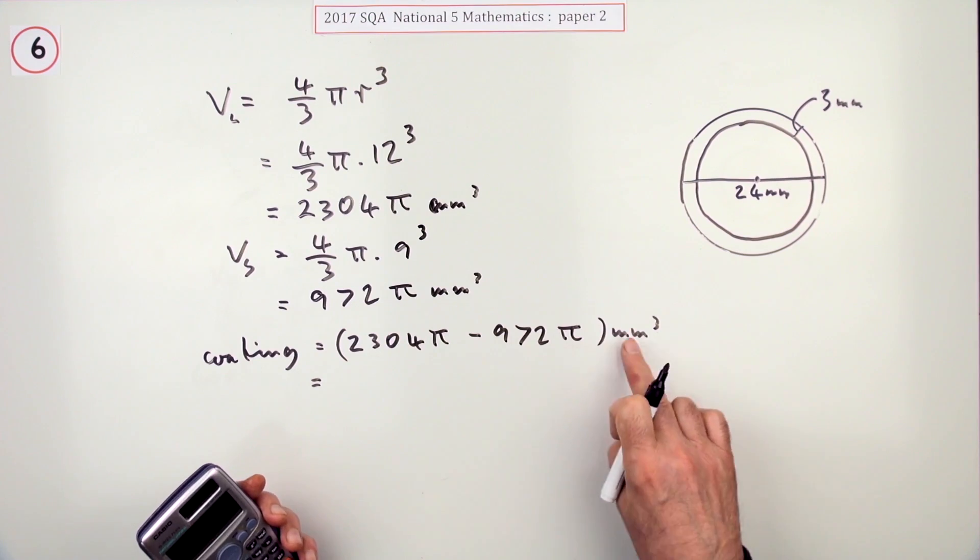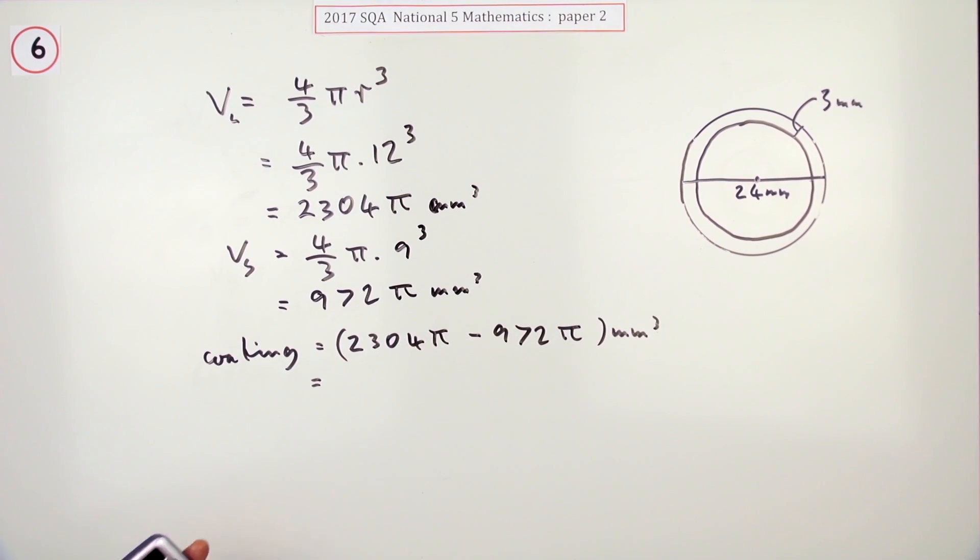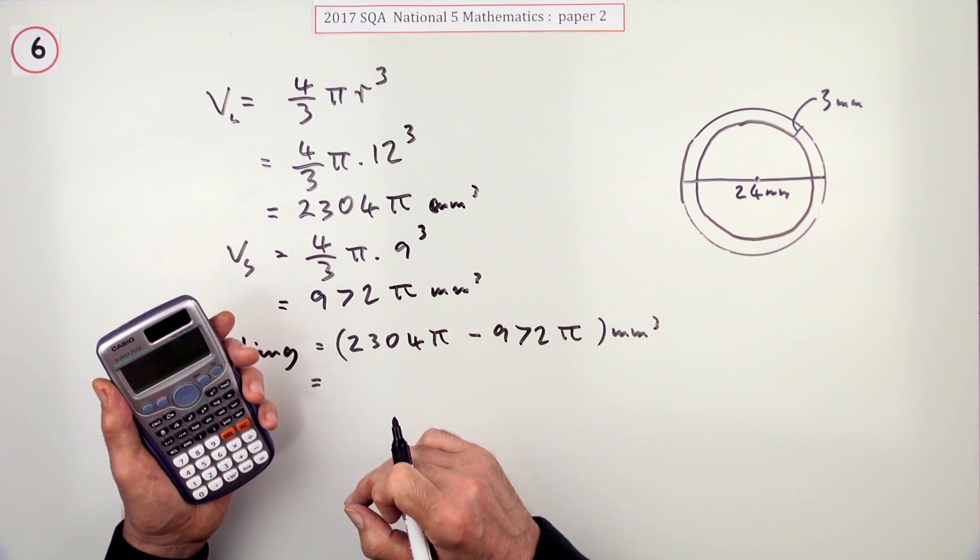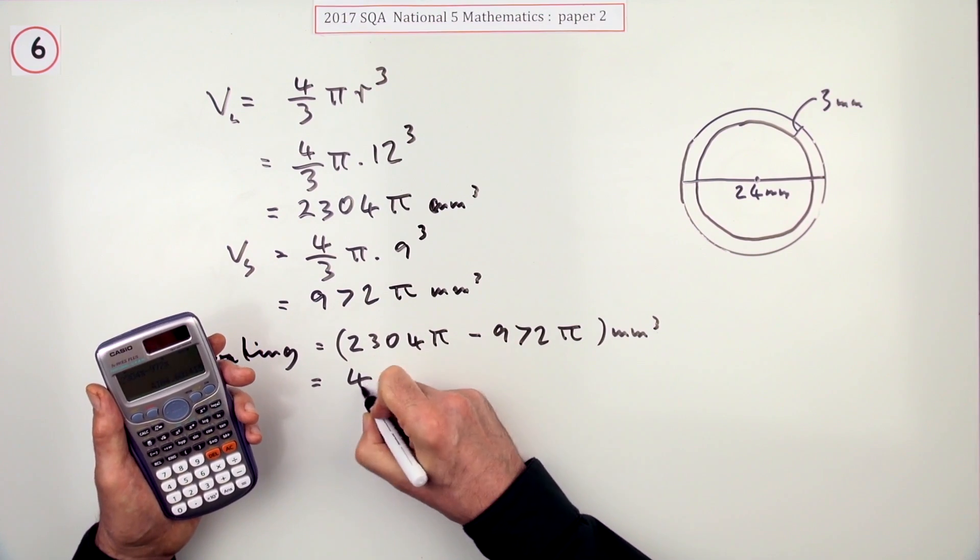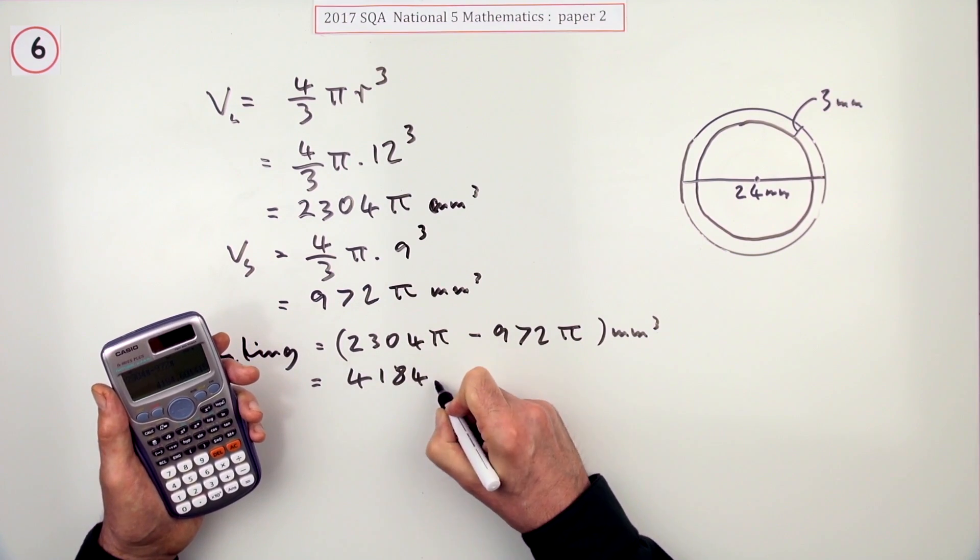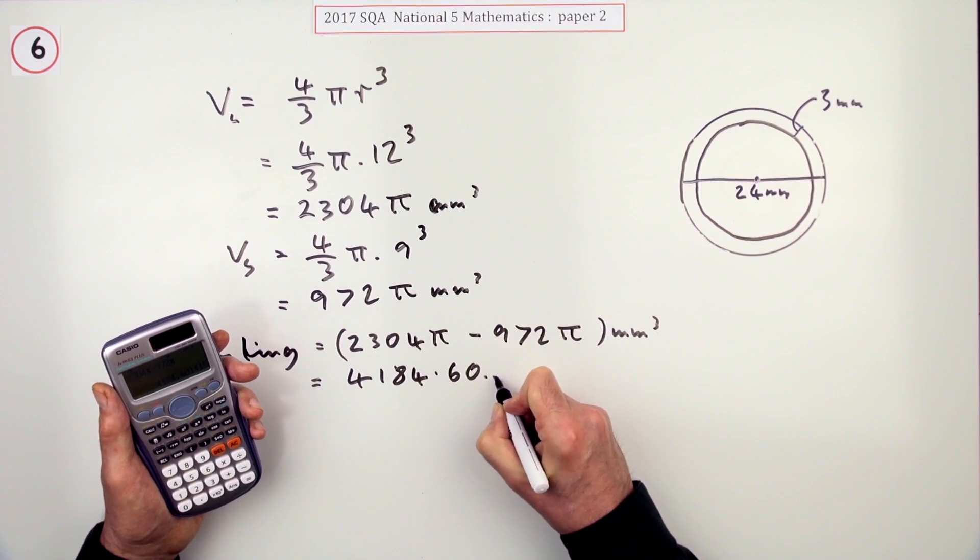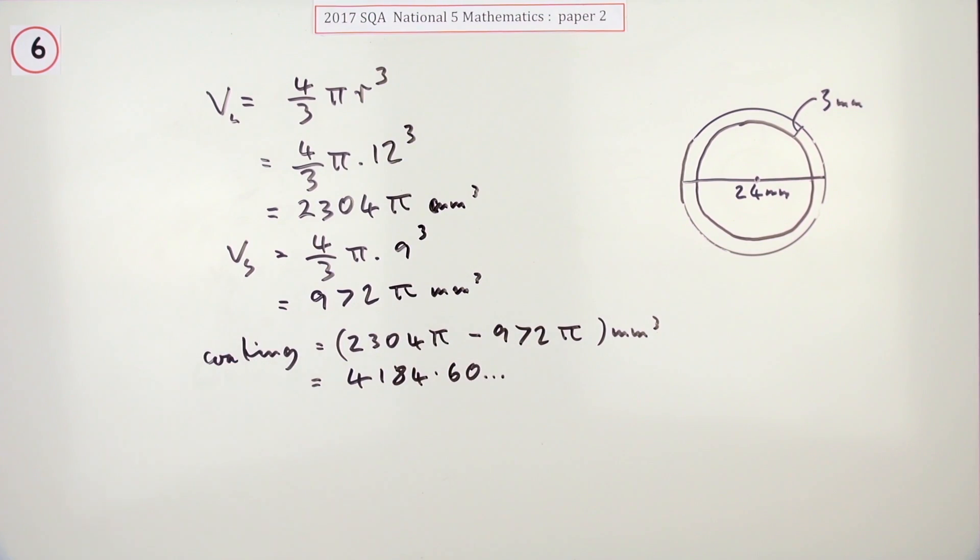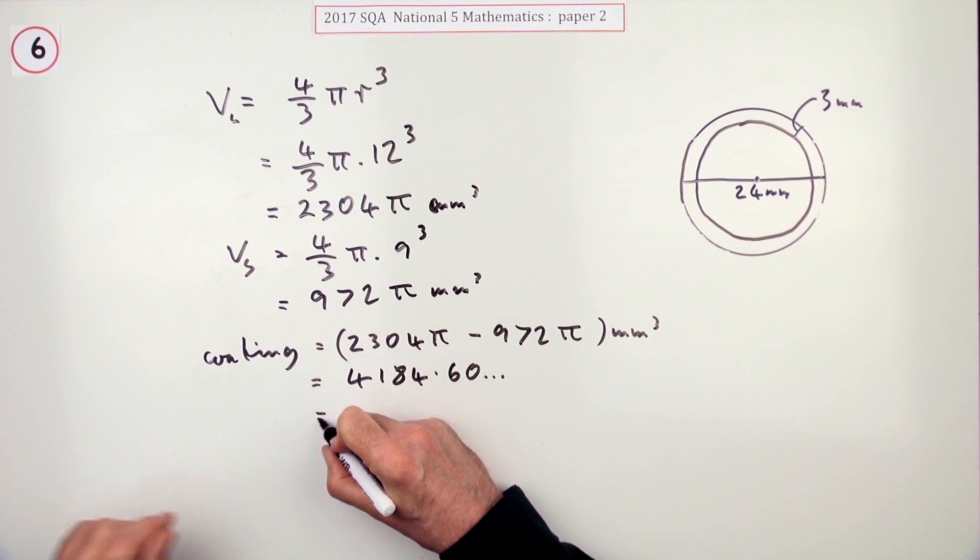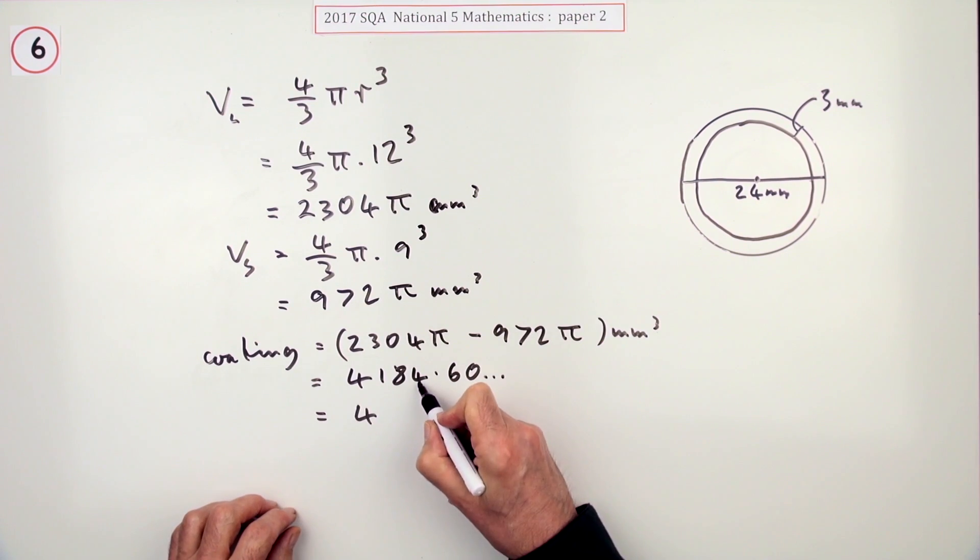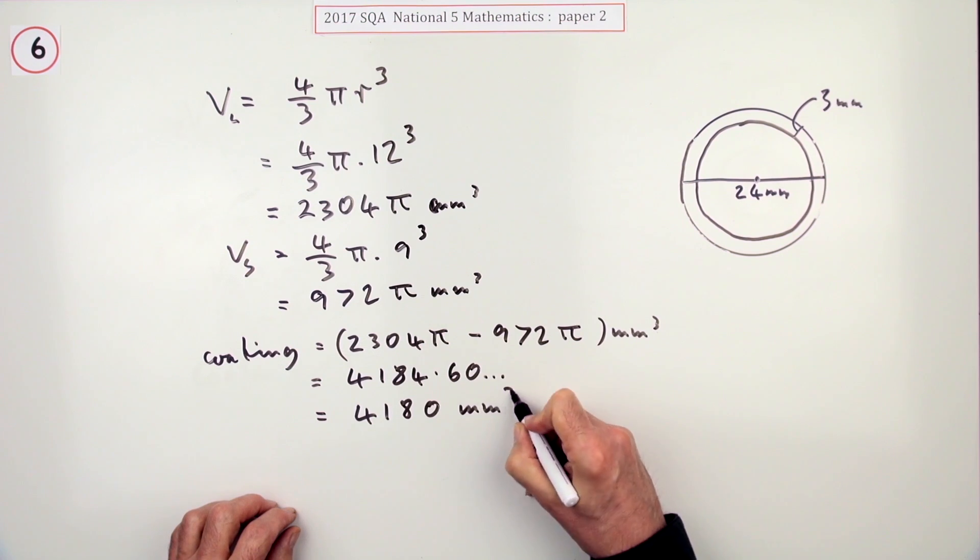Of course you can leave the π out as a common factor, but if you don't trust that you can just put it in. Now this time I don't want π there, so I press the button and it comes 4184.60 and so on. It says give your answer correct to three significant figures, so that will be 4180 mm³.